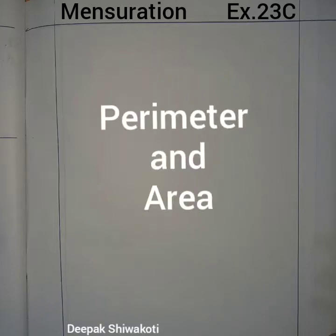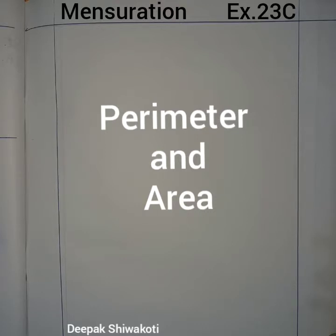Welcome to class 7 mathematics. Today we are going to do exercise 23C, where we will see the technique to solve and find the perimeter and area of different geometrical figures.